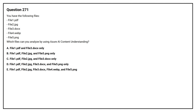Option A: file 1.pdf and file 3.docx only. Option B: file 1.pdf, file 2.jpg, and file 5.png only. Option C: file 1.pdf, file 2.jpg, and file 3.docx only. Option D: file 1.pdf, file 2.jpg, file 3.docx, and file 5.png only. Option E: file 1.pdf, file 2.jpg, file 3.docx, file 4.wip, and file 5.png.